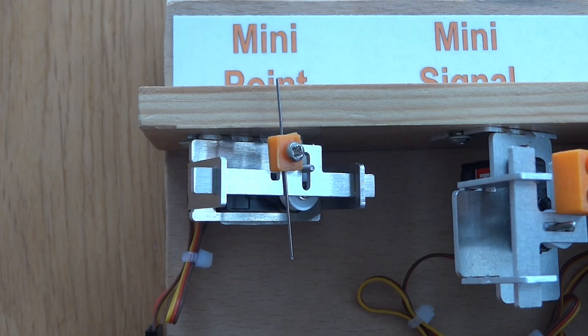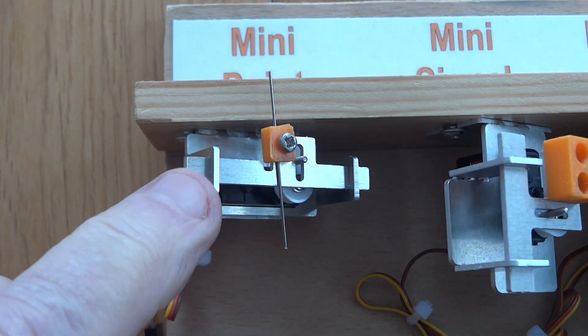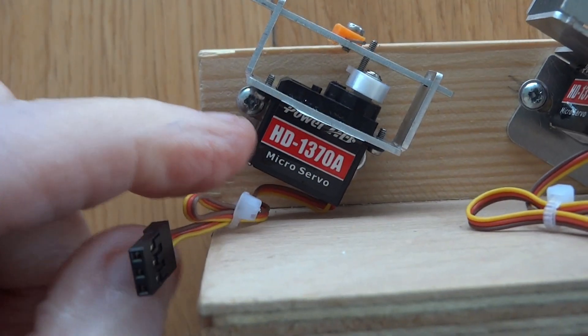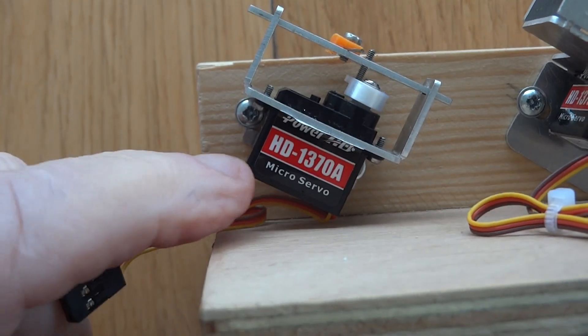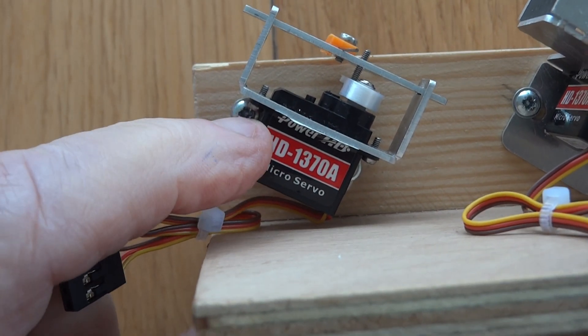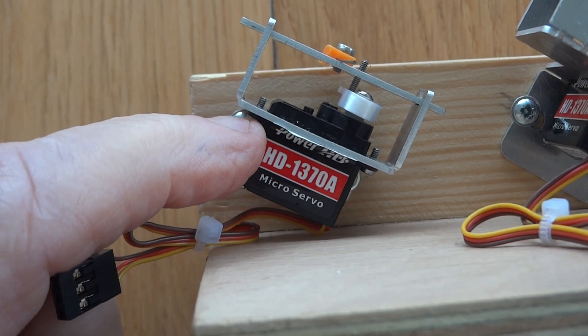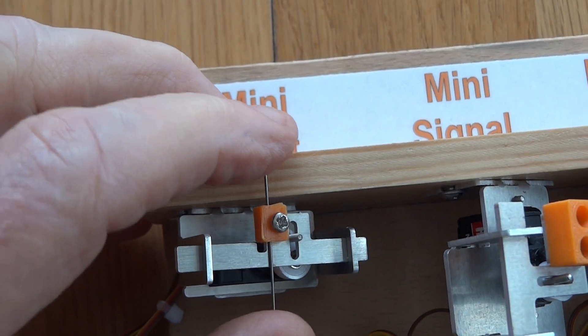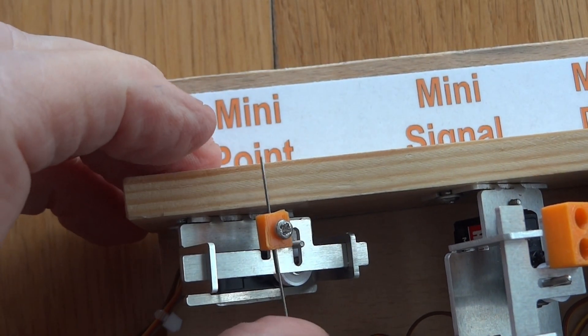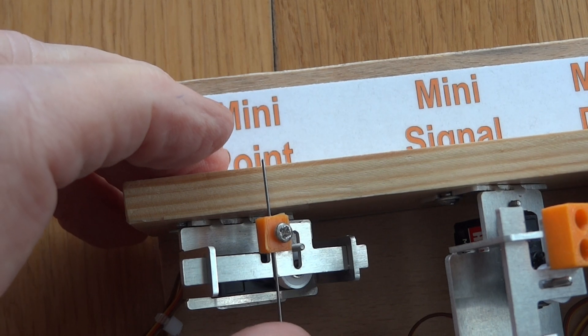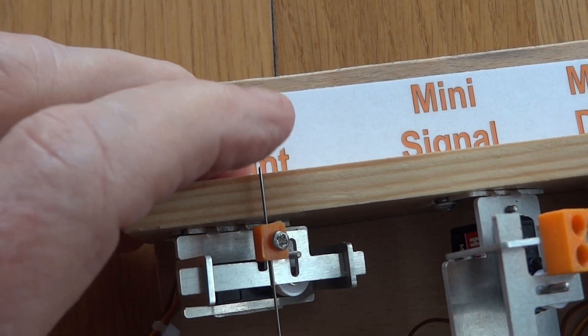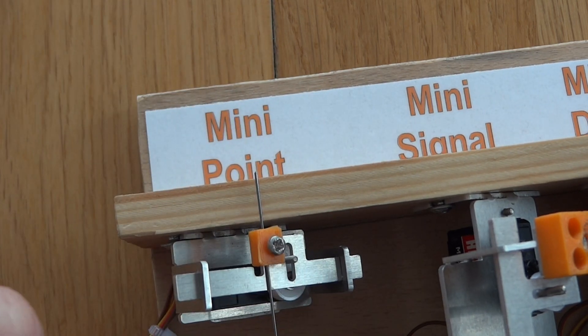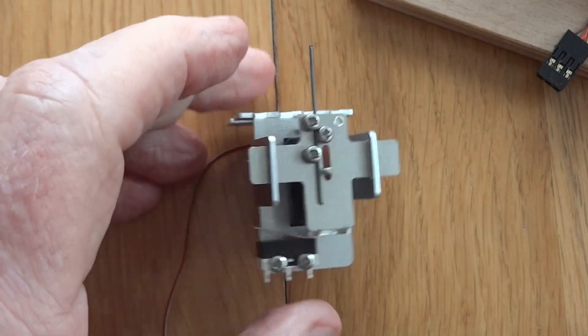This mini point mount we made initially to accommodate the Power HD 1370A servos, which are quite a bit smaller than the normal nine gram servos. We made this initially and it's okay, but it's a tad flimsy and doesn't have switch operation, so we decided it was time to redesign this mount and make something a little bit more sensible, and so we have come up with this.